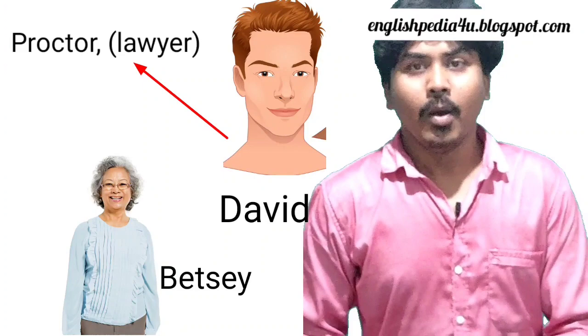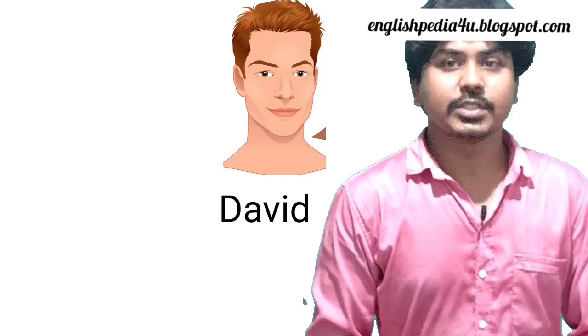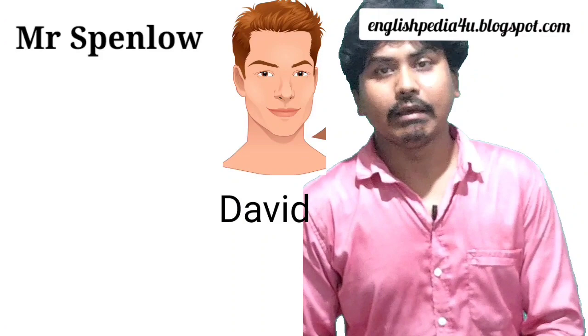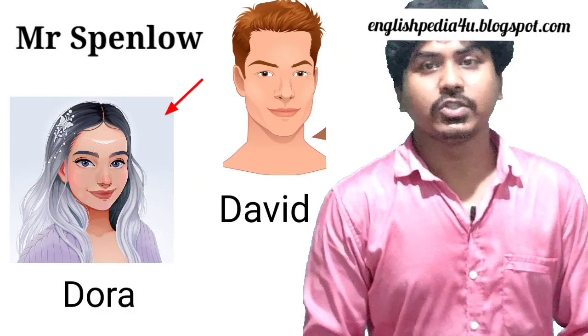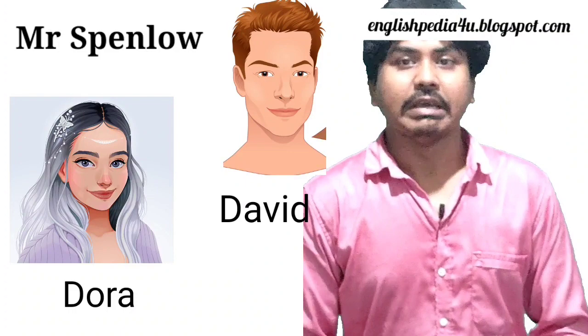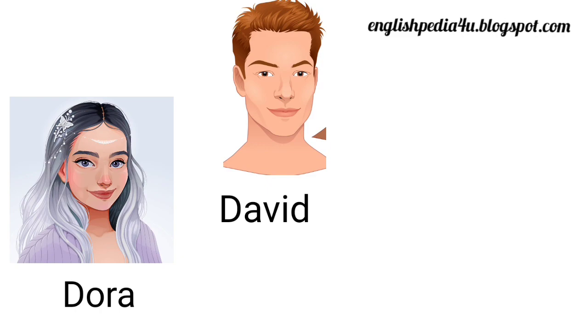Miss Betsy encourages David to pursue a career as a proctor in London — a kind of lawyer. David meets a lawyer named Mr. Spenlow, who one day invites David to his house. There David meets Spenlow's daughter Dora, a very beautiful but childish girl, with whom he quickly falls in love. Later in the novel, he marries Dora, but Dora proves to be a terrible housewife — incompetent in household work. David loves her anyway and is generally happy.